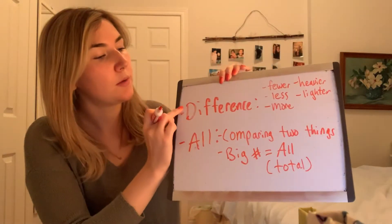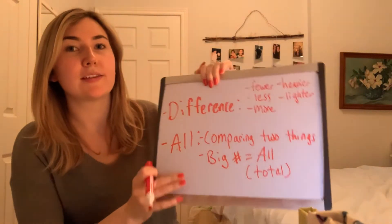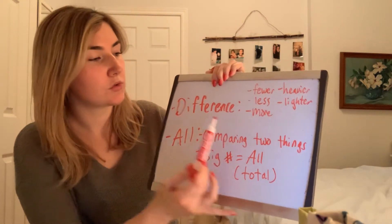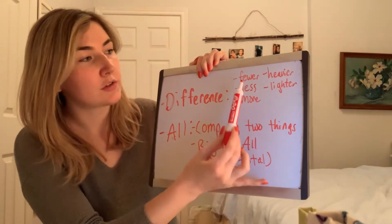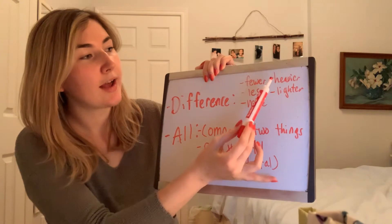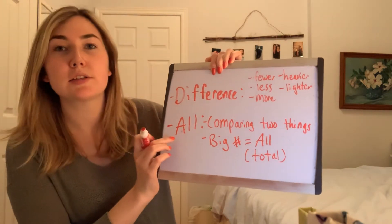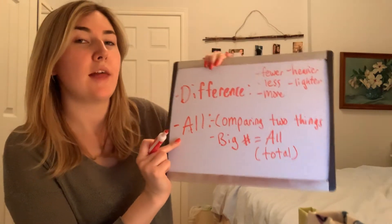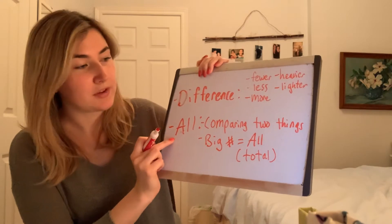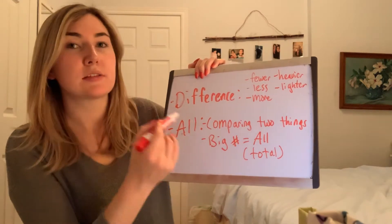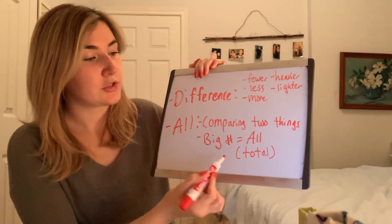Remember, for any type of word problem there are two types: either a difference problem or an all problem. The way we can find this out is whether they have some specific keywords that we're looking for. If it's a difference problem we're going to look for whether there's fewer, less, more, heavier, or lighter in the problem. For an all problem, this is our typical word problem and the big number is the total.